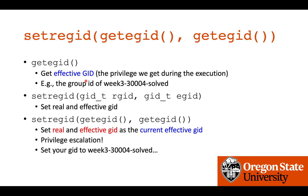The function getegid returns the effective GID — the privilege we get during execution — which lets us read the flag. The setregid function, when supplied with this effective GID as both arguments, sets the real and effective GID to the current effective GID. So basically it performs privilege escalation: your group ID becomes the group ID of the target program, and then you can read the flag.